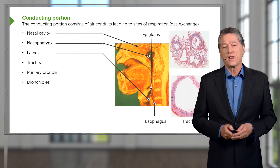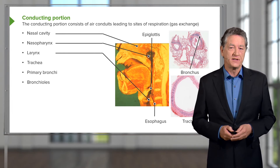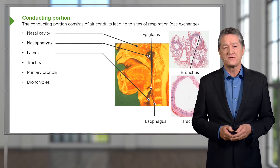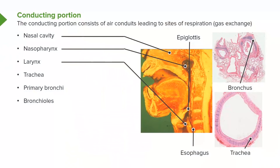When air passes down through the trachea, it passes through another series of tubes called bronchi. A single bronchus is labelled here — you can see a couple of them in this section along with some large blood vessels. They too are part of the conducting portion of the respiratory tract, and they divide as they go deeper into the lung into very small units called bronchioles. That completes the conducting portion of the lung.